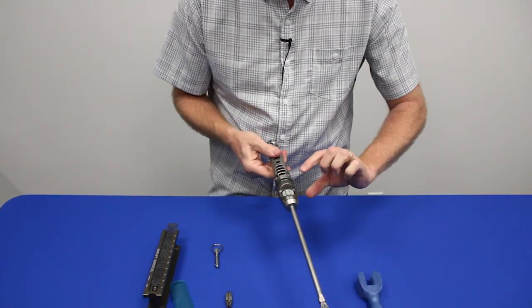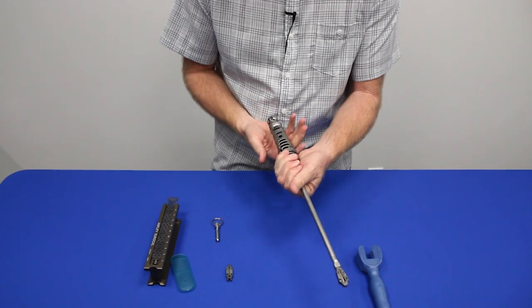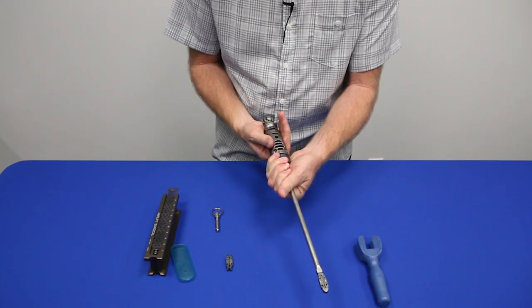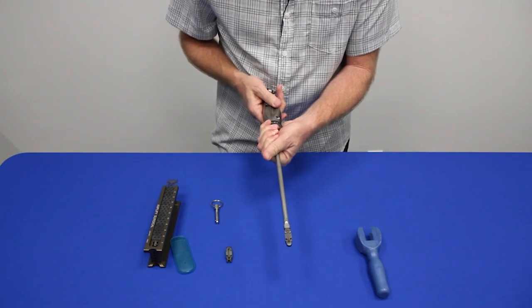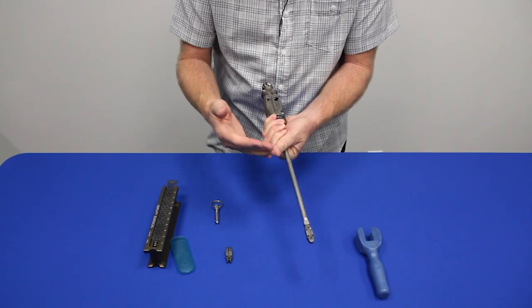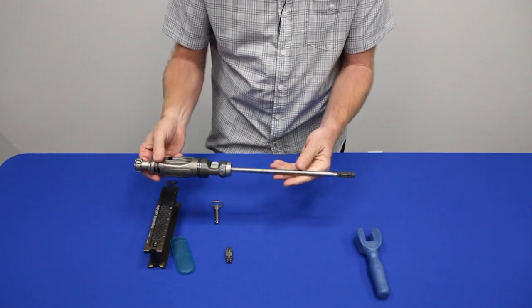We hold the counter torque portion of the handle and we turn the expansion portion of the handle counterclockwise and that draws everything together and collapses the implant in order to hand to the surgeon and is ready for implantation.